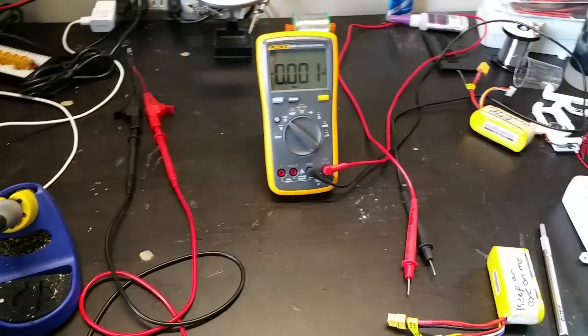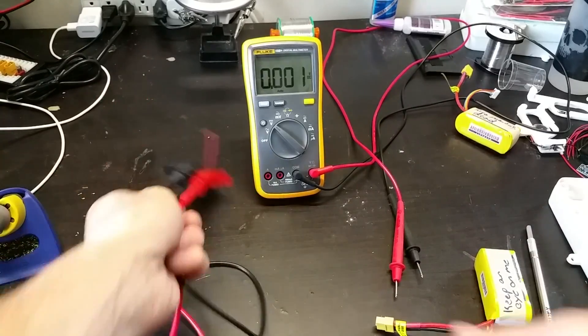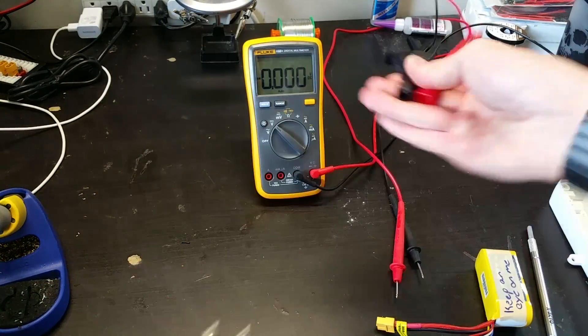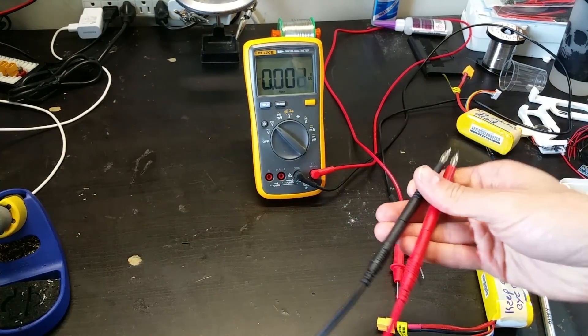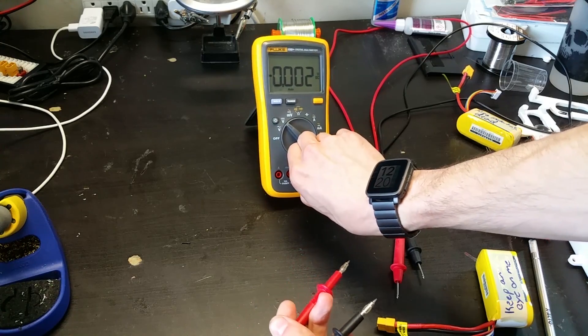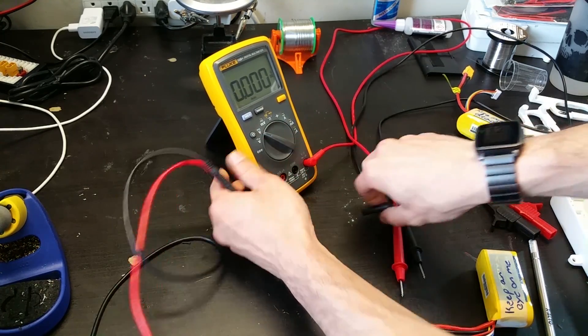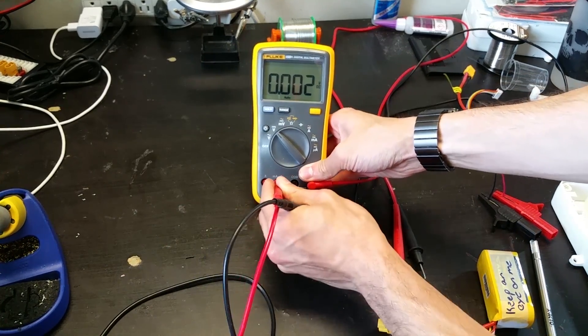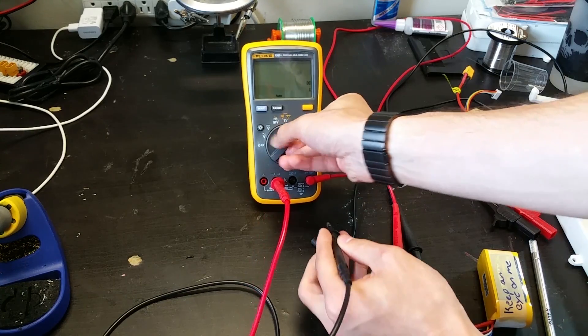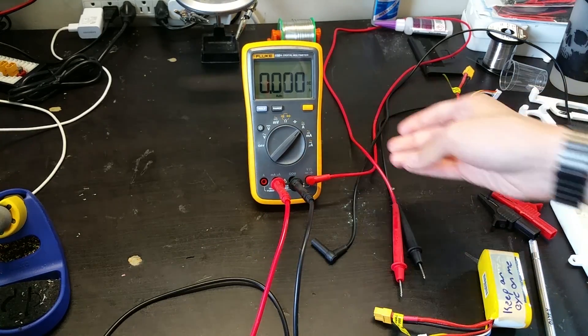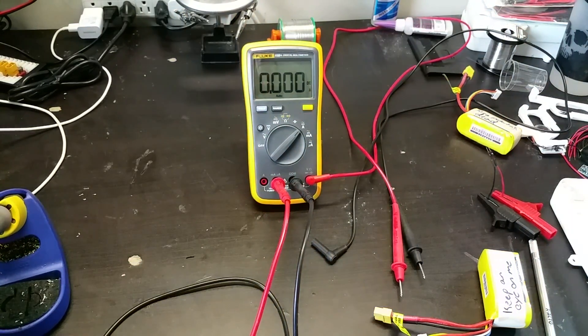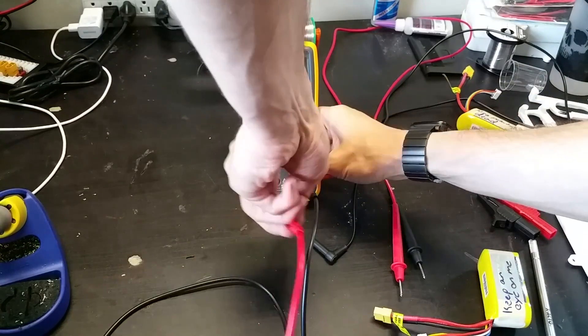And then you'll want to take it over here to your multimeter. Or if your power supply has a better current setting ability built into it, then you'll just do it on there. But basically what you want to do now is limit the current that the power supply will be able to output.